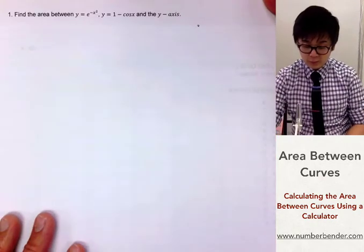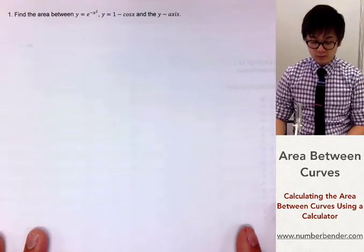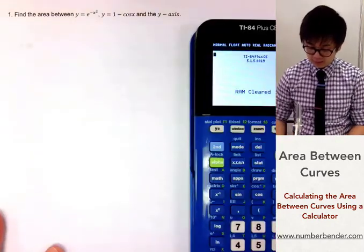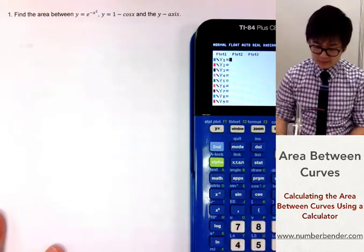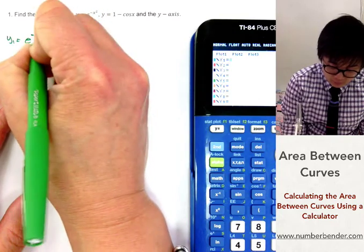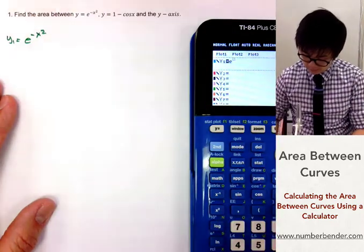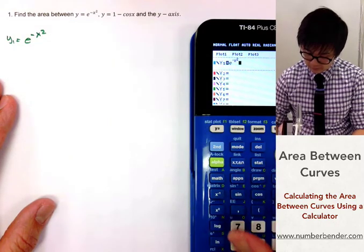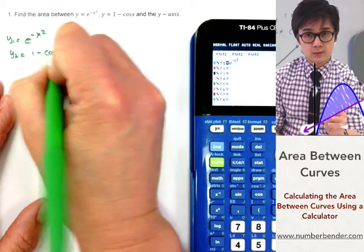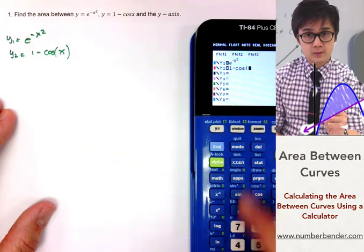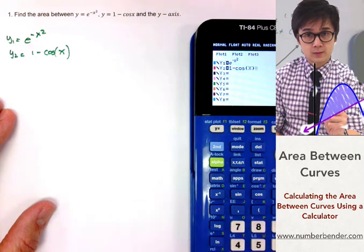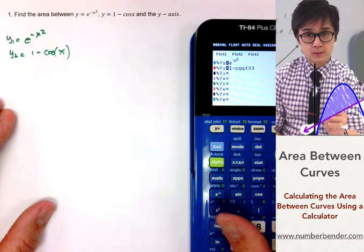We have problem number one. Let's compute for the area between the first function y equals e^(-x²) and the second function y equals 1-cos(x) and the y-axis. First let's graph the function using the graphing calculator. Y sub 1, let's define y sub 1 as e^(-x²), and y sub 2 is 1-cos(x).